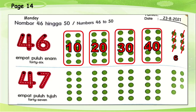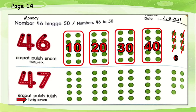Now let's move on to the next number. 4 and 7 together will be 47. Ampat pulo tujo. Now let's count 47.